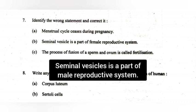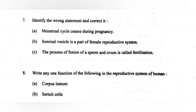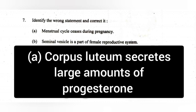8. Write any one function of the following in the reproductive system of humans. A. Corpus luteum. Answer: Corpus luteum secretes a large amount of progesterone.